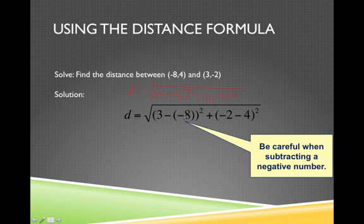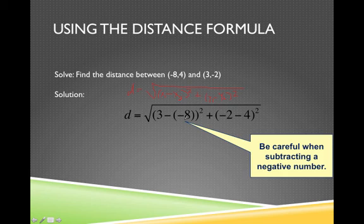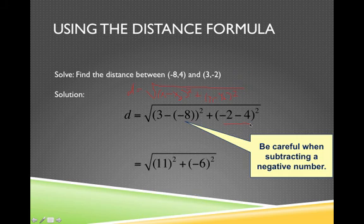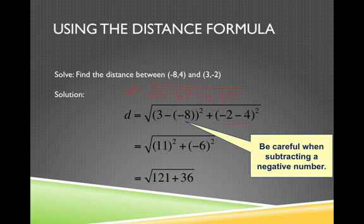So 3 minus negative 8 gives me 3 plus 8, and over here, you can see how I've plugged in my y coordinates, I have negative 2 minus 4. This gives me 11 squared plus negative 6 squared. I can get those squares, and then I can add those two numbers together.